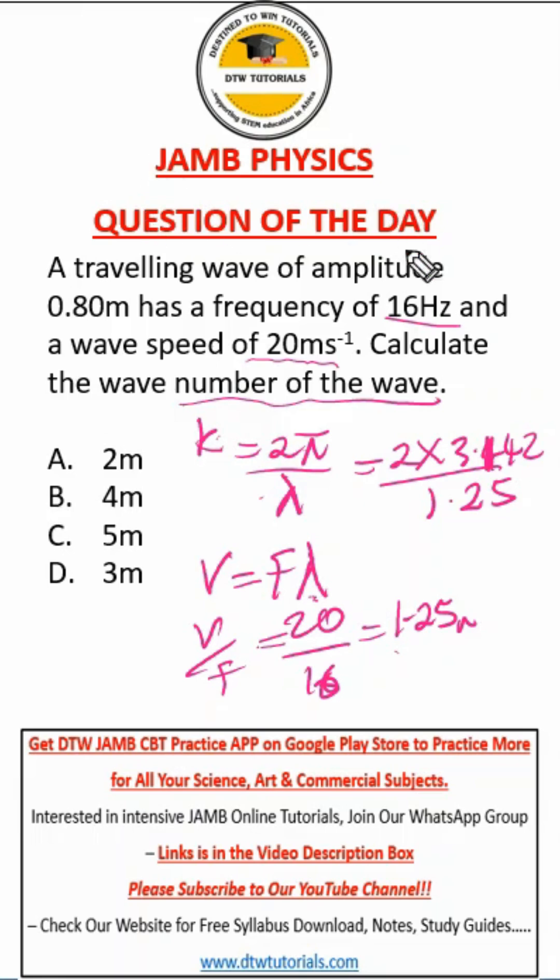you should get 5.027. You can quickly approximate this to one significant figure, and that would be 5. So our answer here is C.